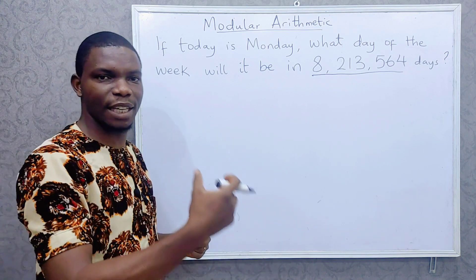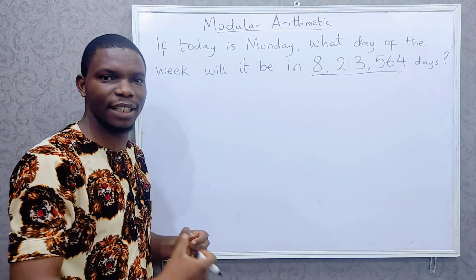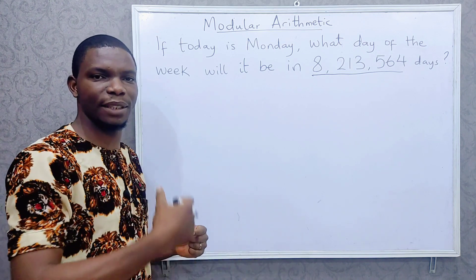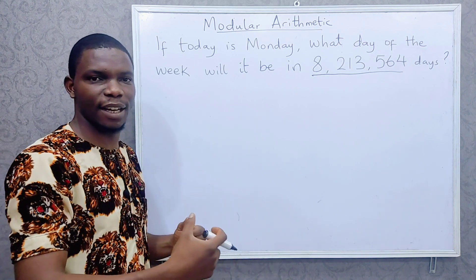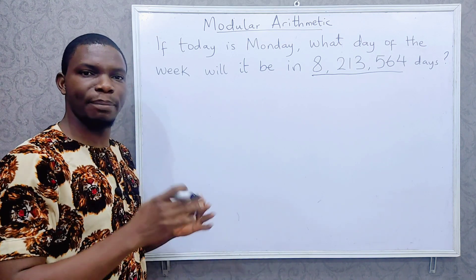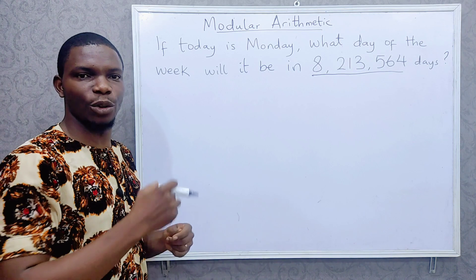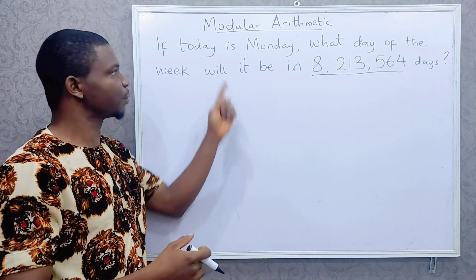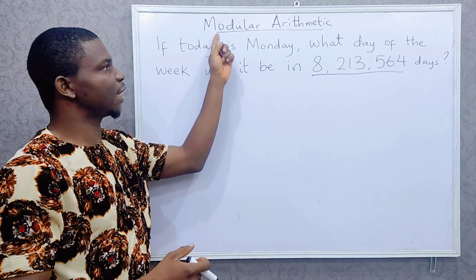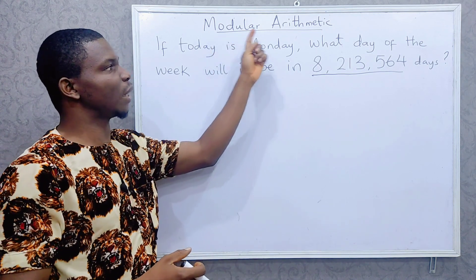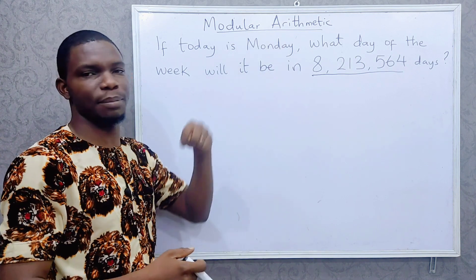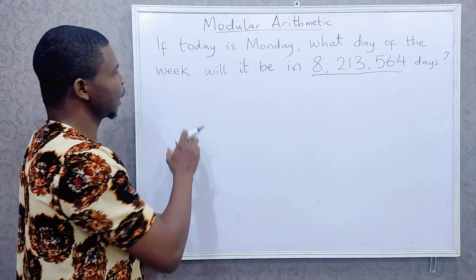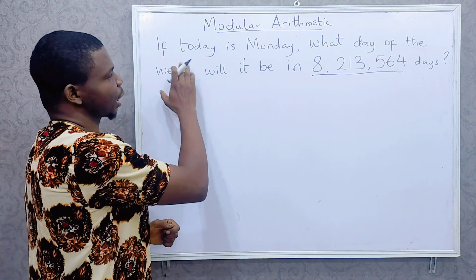This is modular arithmetic — arithmetic that deals with things that go in cycles. If today is Monday, in seven days time it will be Monday again, and in another seven days it will be Monday again. Things that go in cycles are dealt with using modular arithmetic.